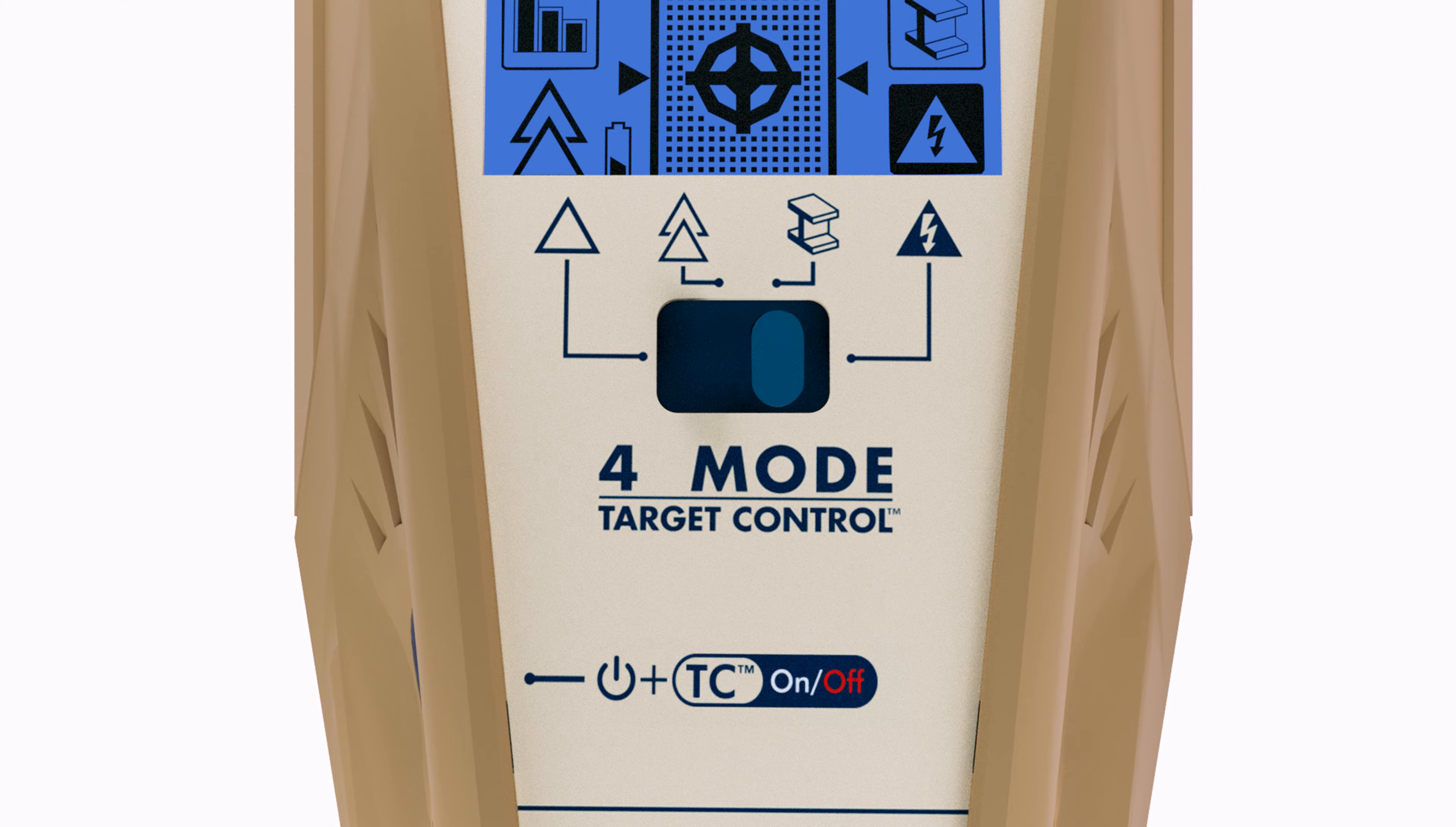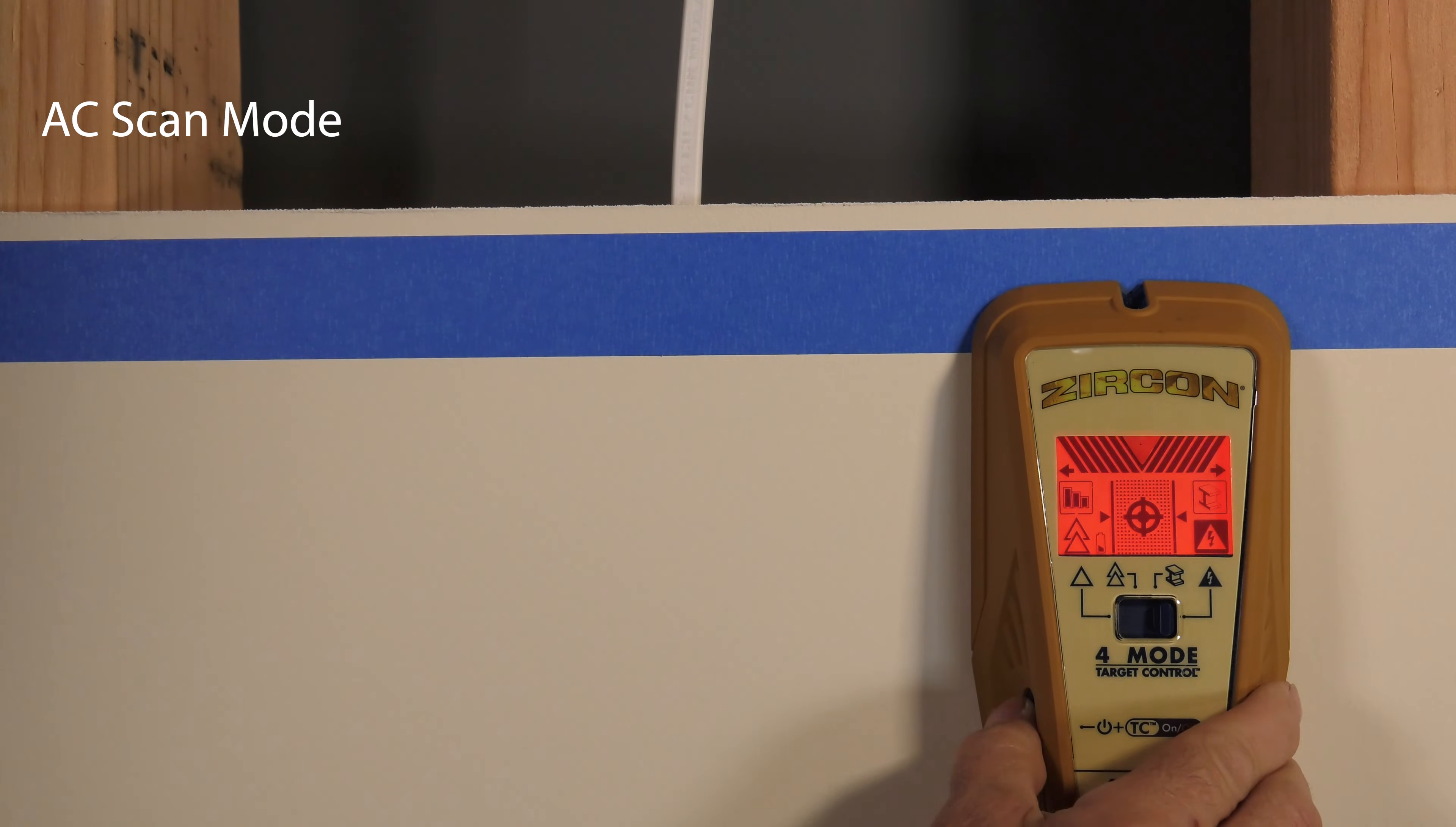To find AC, switch the mode selector to AC scan. Place the tool on the wall and press and hold the power button. The backlight will illuminate red. Wait for the beep to confirm calibration has completed.